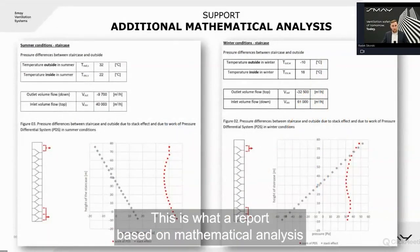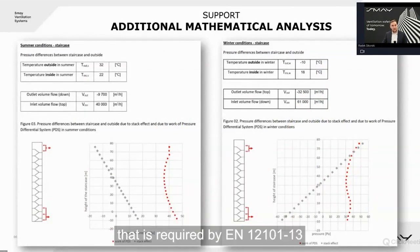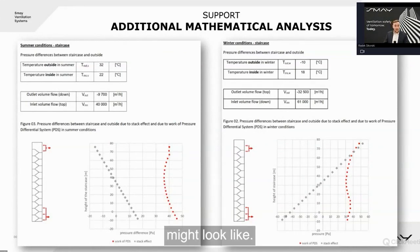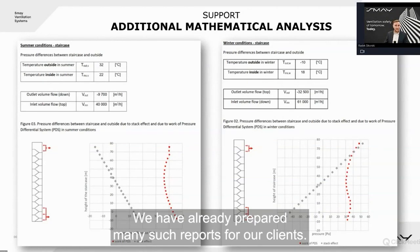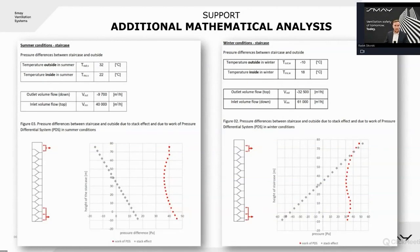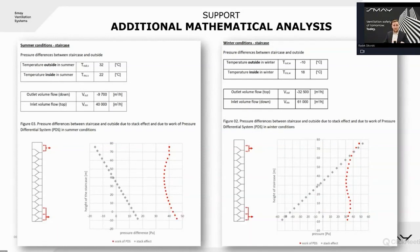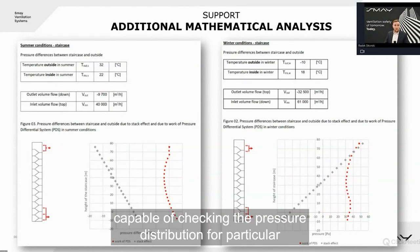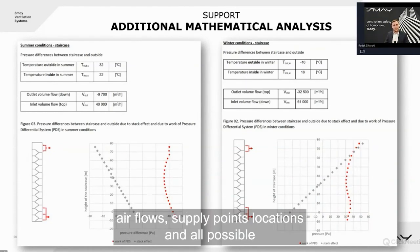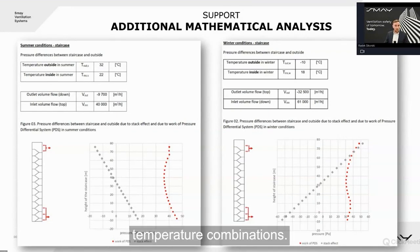This is what a report based on mathematical analysis, as required by EN 12101 Part 13, might look like. We have already prepared many such reports for our clients. The report must include a check of winter, isothermal, and summer conditions. We are capable of checking pressure distribution for particular air flows, supply point locations, and all possible temperature combinations.